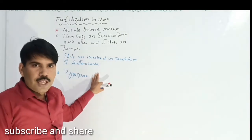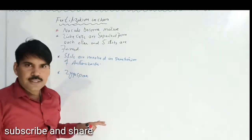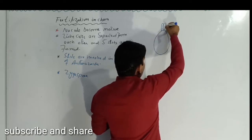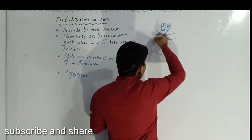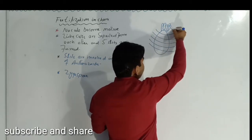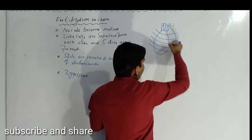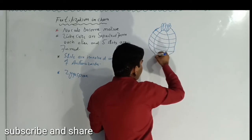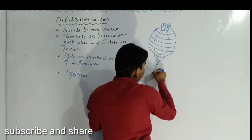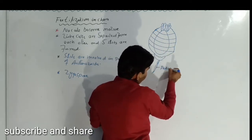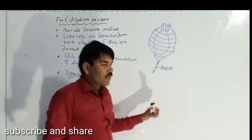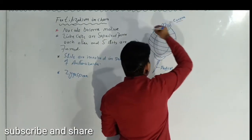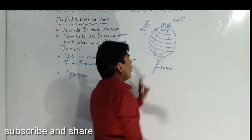We can see with the help of a diagram how these processes occur. This structure is also known as the nucule, and these are tube cells which are connected or fused with each other. These are the fusions, and this is the peduncle cell which bears this whole structure. And this structure is present on the peduncle cell. These are the coronal cells, and this whole structure is known as the nucule — a mature nucule.